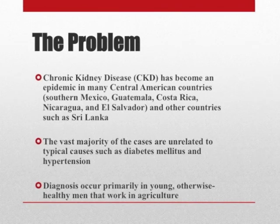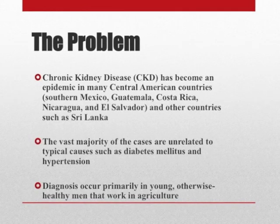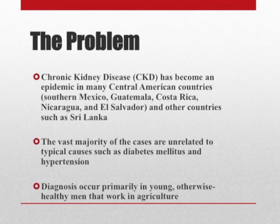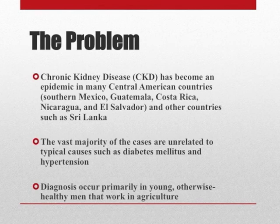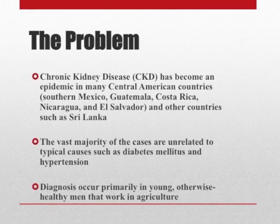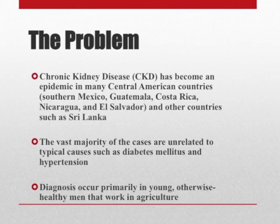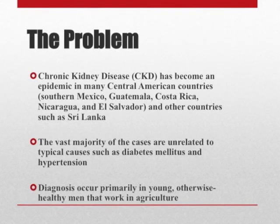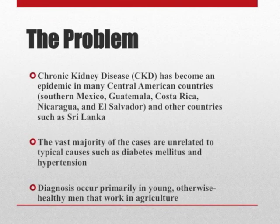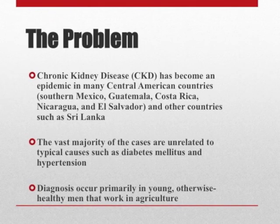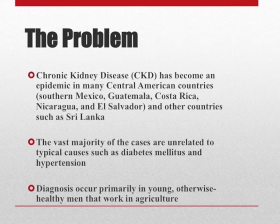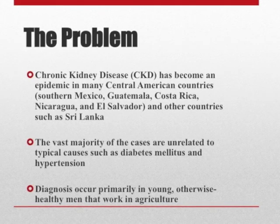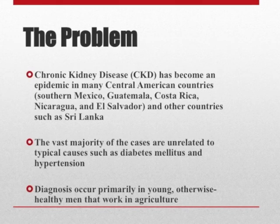The problem we have in El Salvador is that chronic kidney disease has become widespread, especially among the agricultural population. Chronic kidney disease has become an epidemic, not only in El Salvador, but in many other Central American countries, and also in places like Sri Lanka. The vast majority of cases are unrelated to typical causes such as diabetes mellitus and hypertension. Diagnosis occurs primarily in young, otherwise healthy men who work in agriculture.